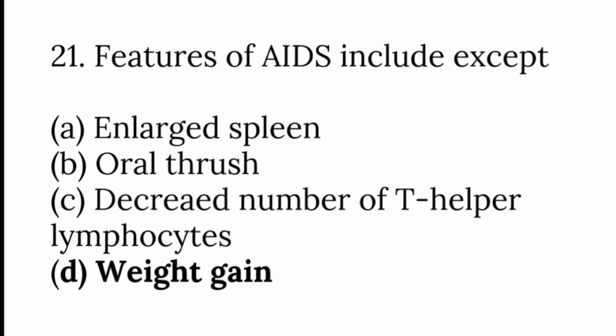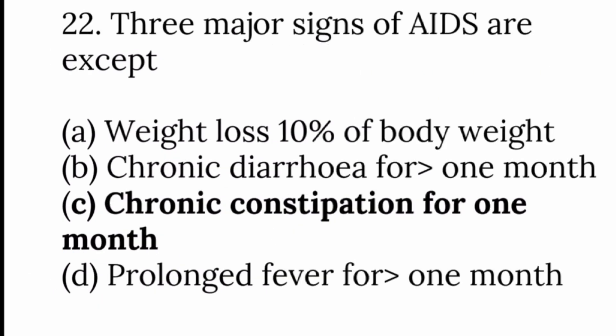Features of AIDS include all except weight gain. Other features include enlarged spleen, oral thrush, and decreased number of T helper lymphocytes. Regarding the three major signs of AIDS, chronic constipation is not a major sign.